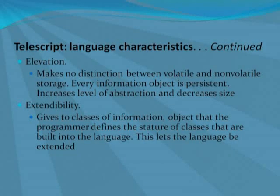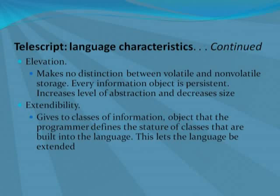Another characteristic is elevation: the language makes no distinction between volatile and non-volatile storage, and every information object is persistent. This increases an agent's level of abstraction and decreases its size. Finally, extendability: the language gives classes of information objects that the programmer defines the same stature as classes that are built into the language, allowing the language to be extended for particular purposes.